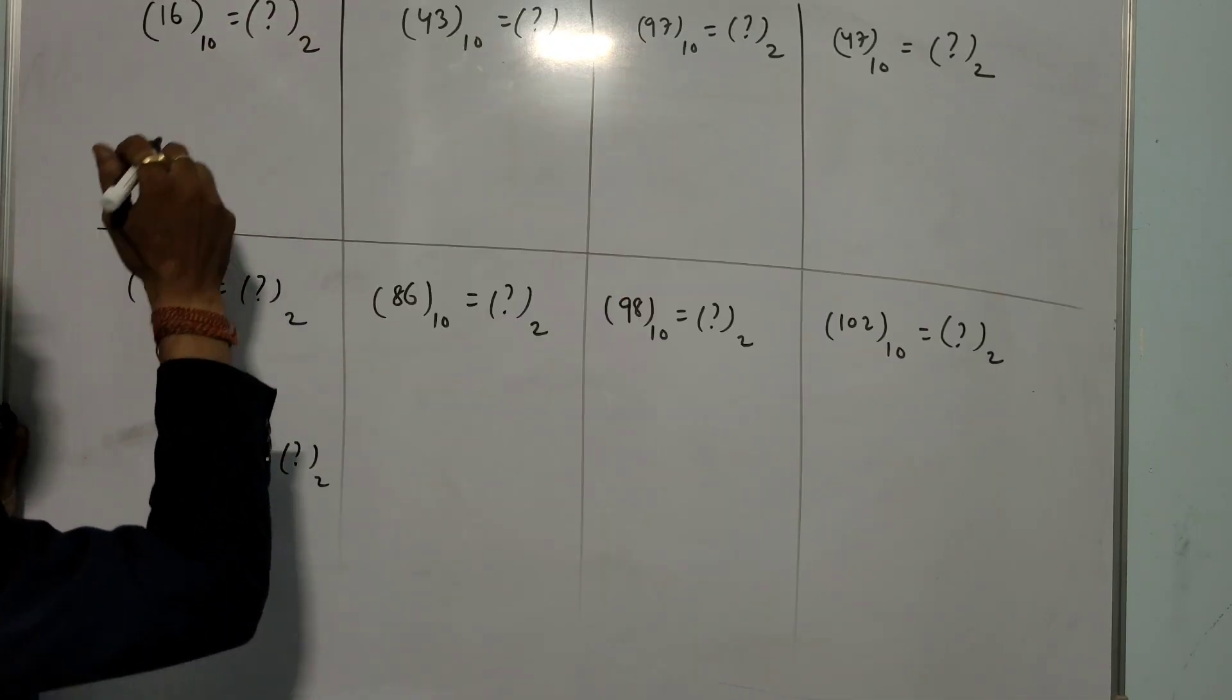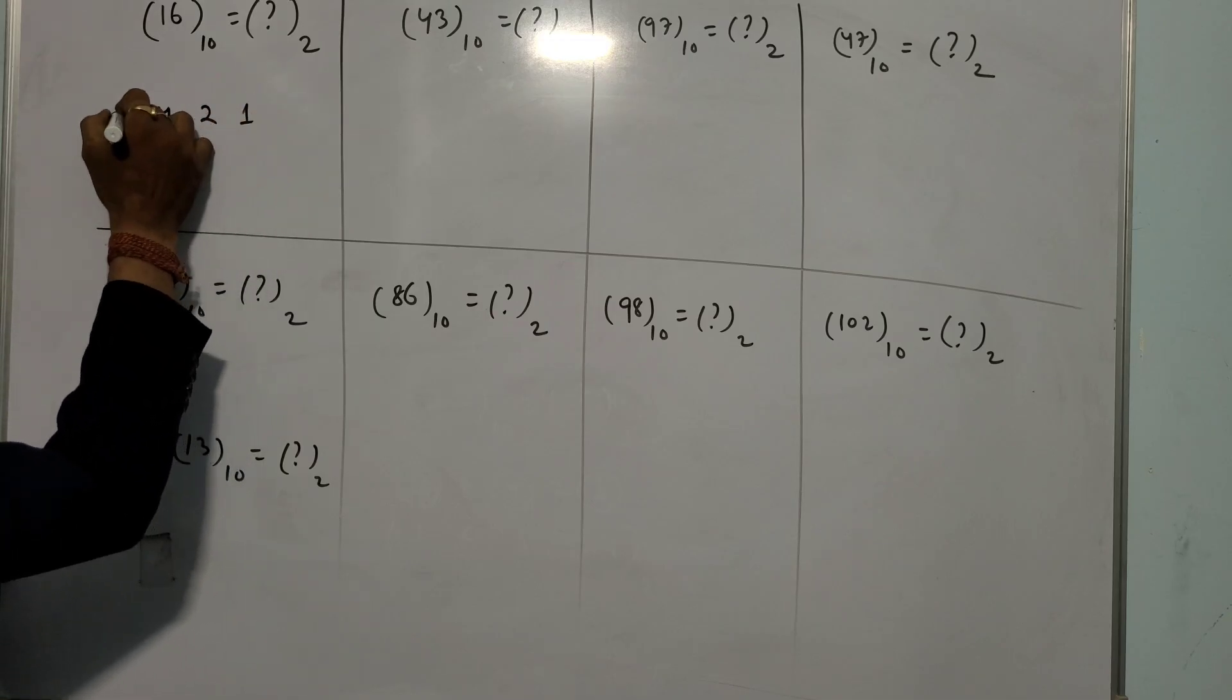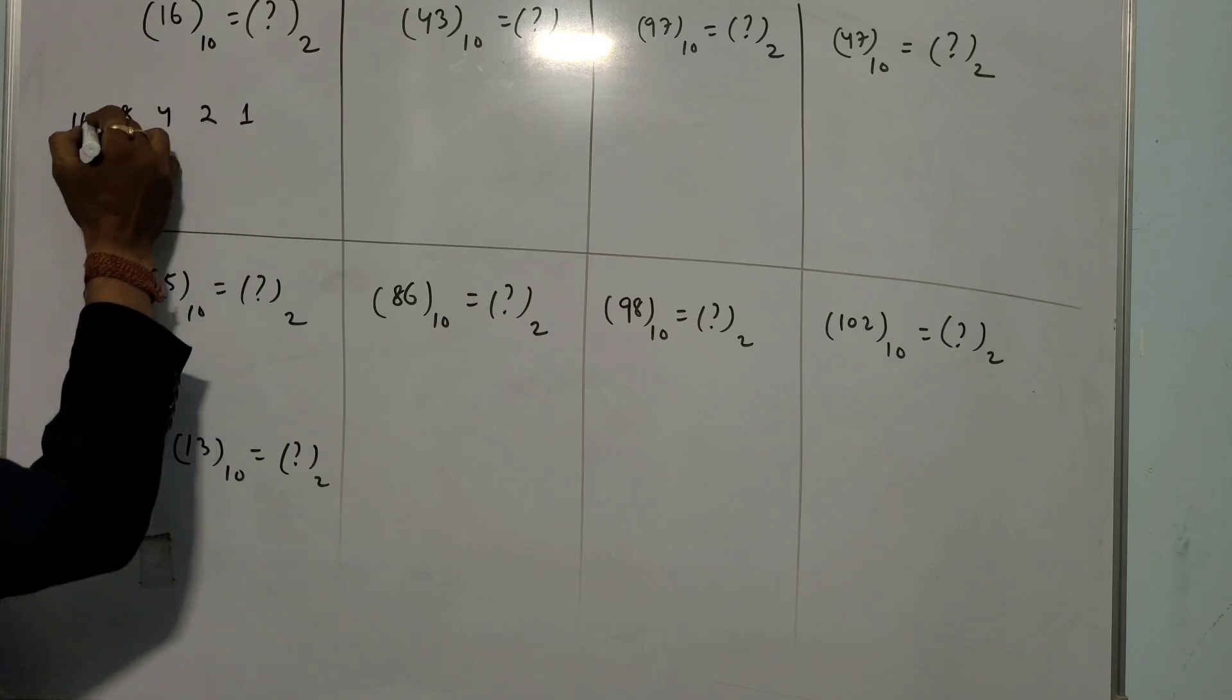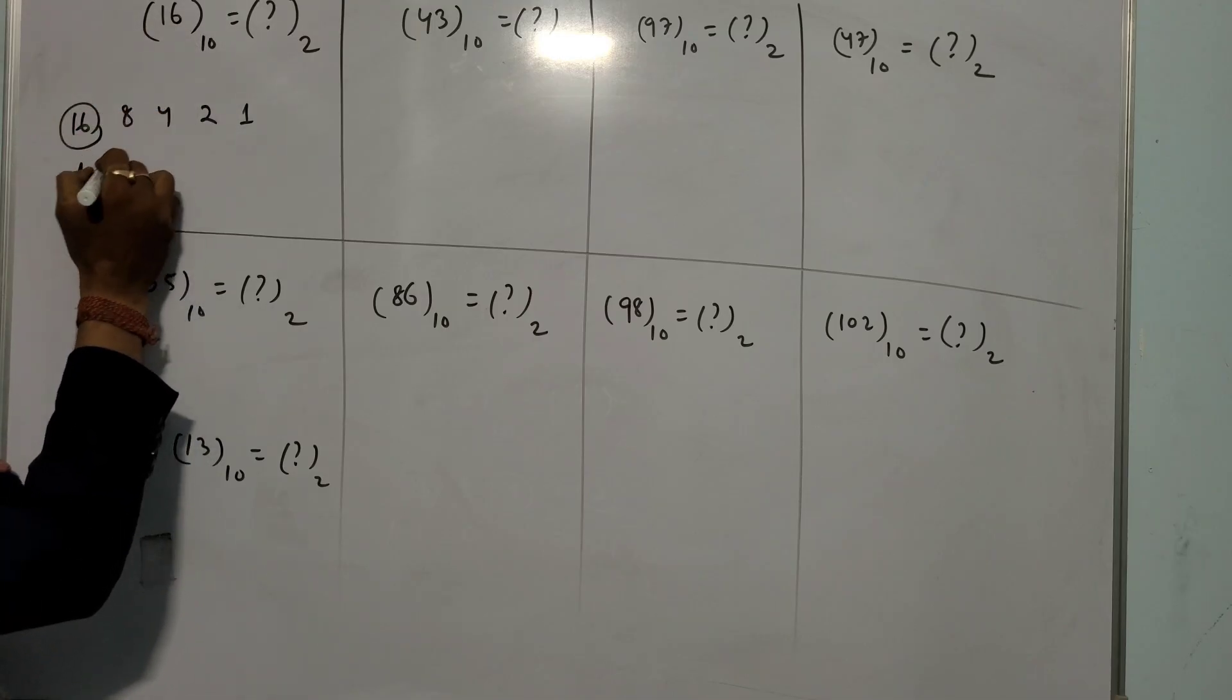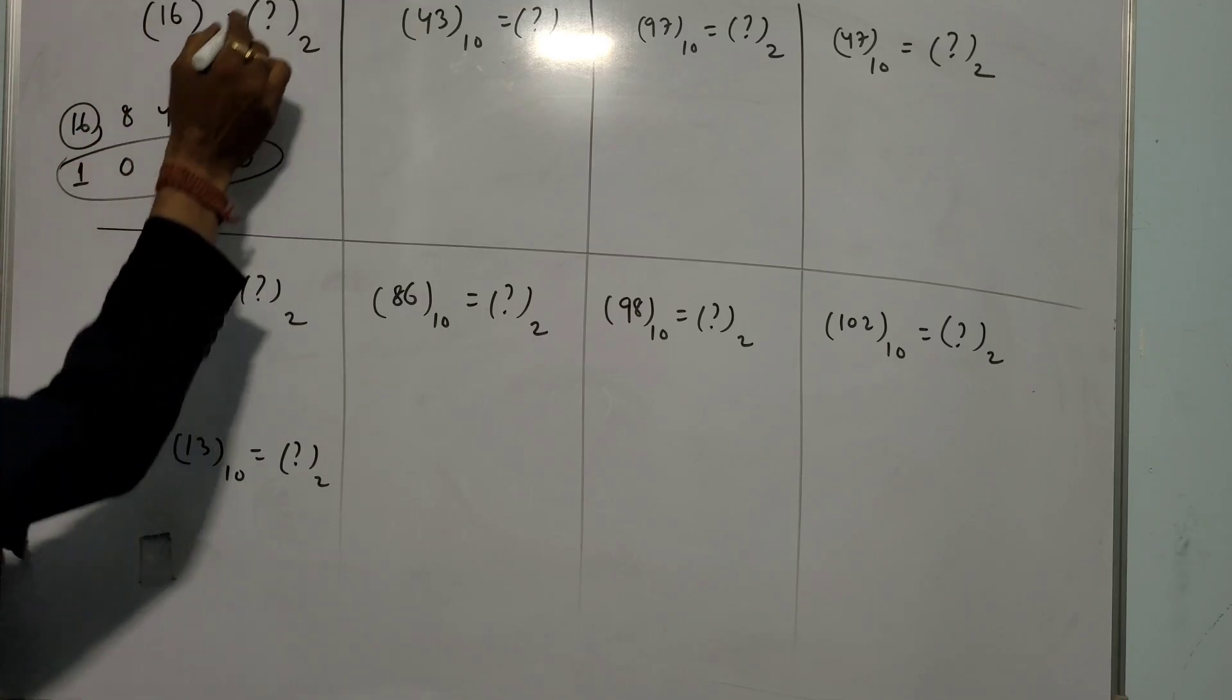16 is in decimal form. What is the corresponding binary? You write 1, 2, 4, then 8, then 16. So 16 is already done. So 10000 is the corresponding binary figure.